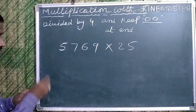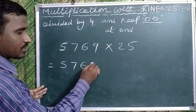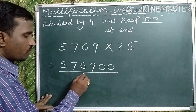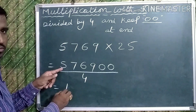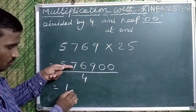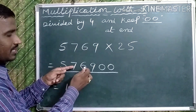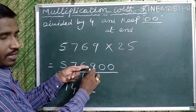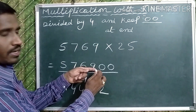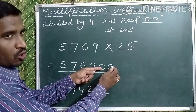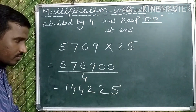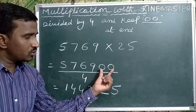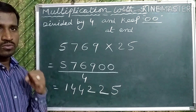Observe one more example: 5769 multiplied by 25. Keep 2 zeros at the end and divide by 4. 4 ones are 4; carry 1, then 17; 4 fours are 16; carry 1, then 16; 4 fours are 16; 4 twos are 8; remainder 1, then 10; 4 twos are 8; remainder 2, then 20; 4 fives are 20. So in the case of multiplication with 25, keep 2 zeros at the end and divide by 4.